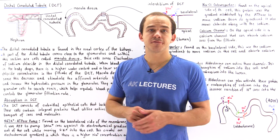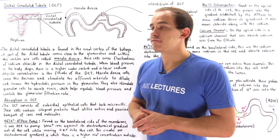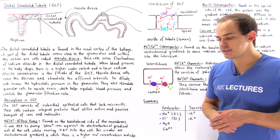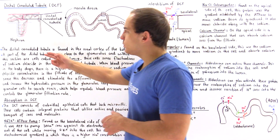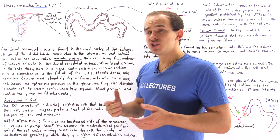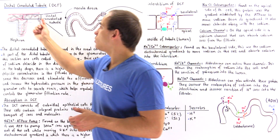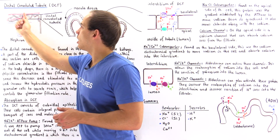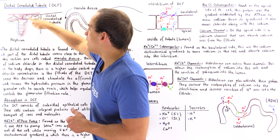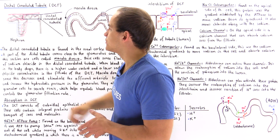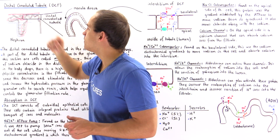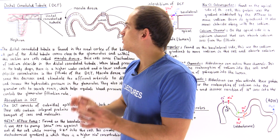The next segment of our nephron we're going to focus on is called the distal convoluted tubule, or simply DCT. Convoluted simply means it makes many twists and turns, and distal means it's located relatively far from our renal corpuscle.